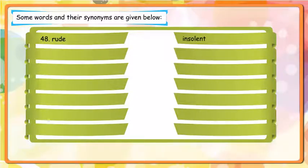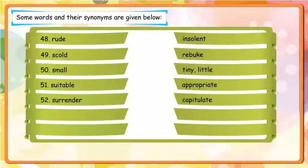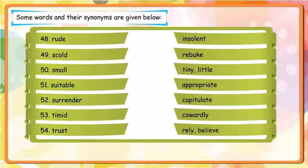Scold - Rebuke; Small - Tiny, Little; Suitable - Appropriate; Surrender - Capitulate; Timid - Cowardly; Trust - Rely, Believe.